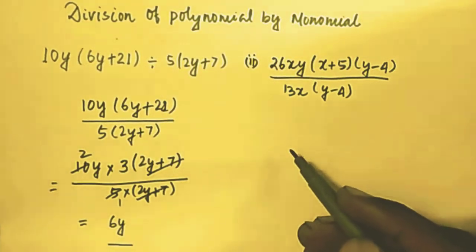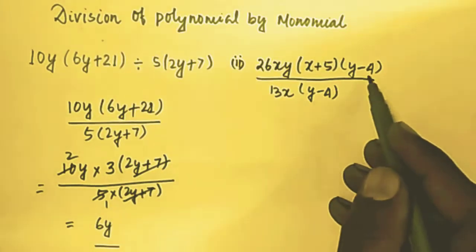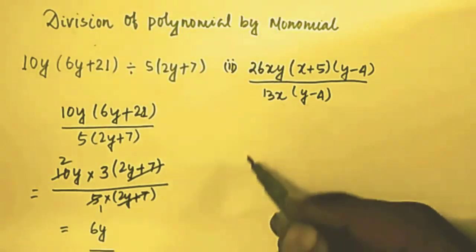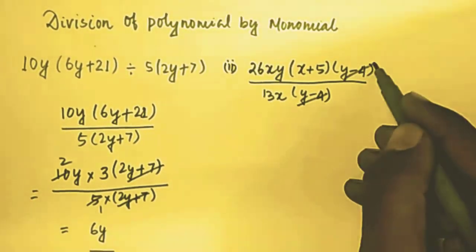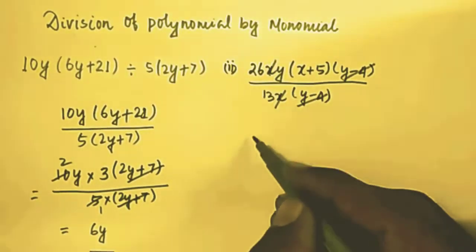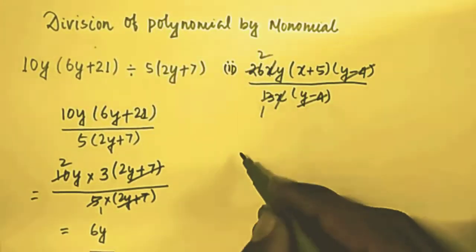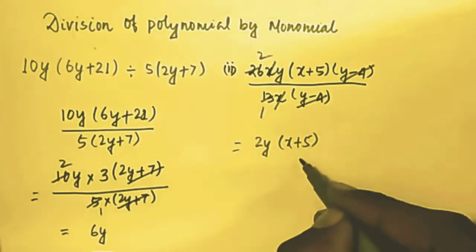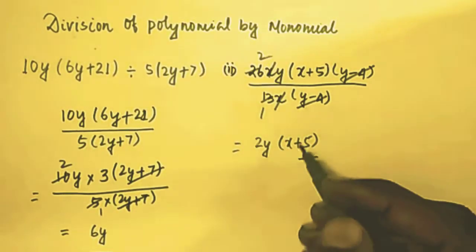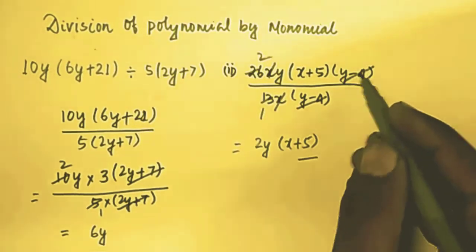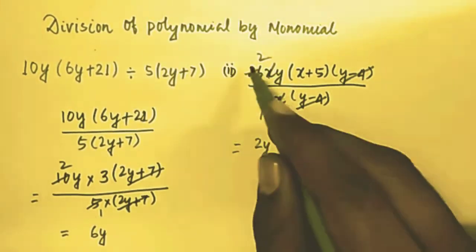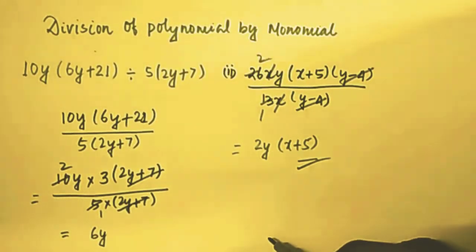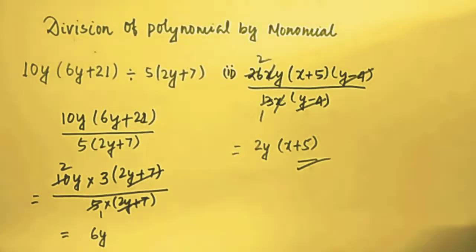The next question is 26xy(x + y)(y − 4) divided by 13x(y − 4). It is a simple question: (y − 4) and (y − 4) cancel out, x and x cancel out, and 13 and 26 simplify giving 2. So the remaining part is 2y(x + y), which will be the answer.